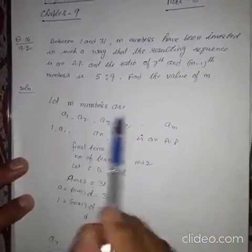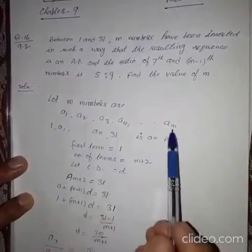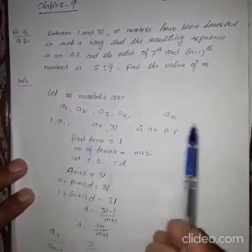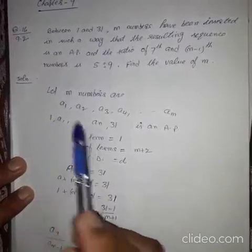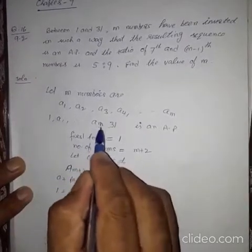Let M numbers are A1, A2, A3 up to AM. Now if you insert these numbers between 1 and 31, then 1, A1 up to AM, 31, this will be an AP.